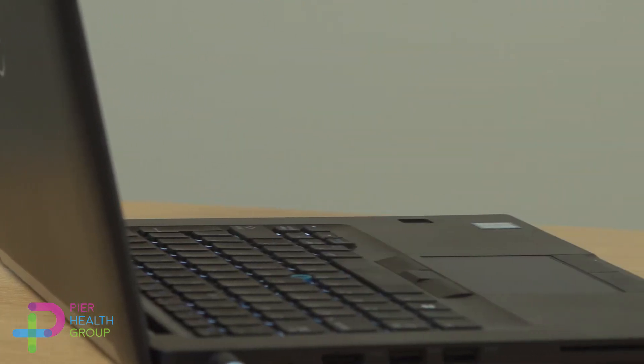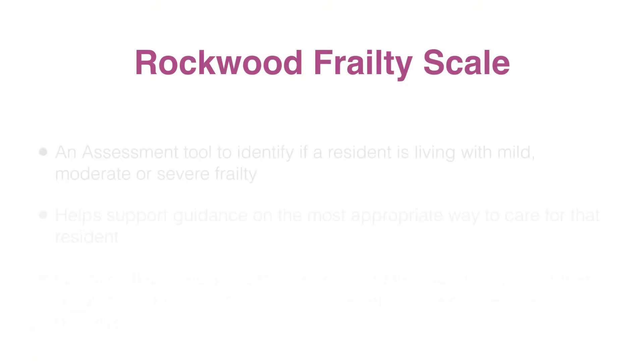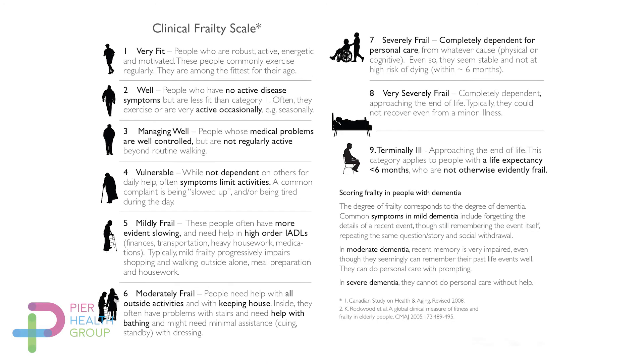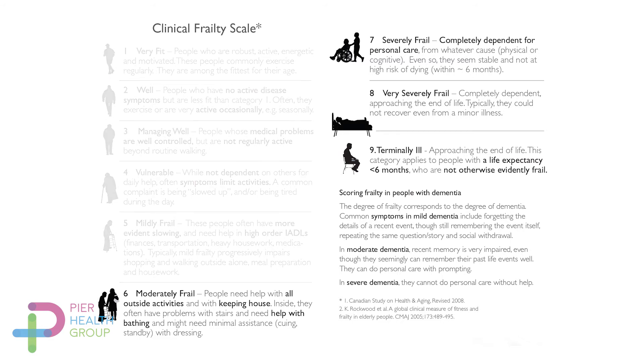I would like to show you the Rockwood Frailty Scale. This is a tool used nationally that will help you identify the level of frailty of your residents to ensure you are able to meet their needs. As you can see from the chart, there are nine different levels of frailty, and your residents could likely be at levels six through nine.